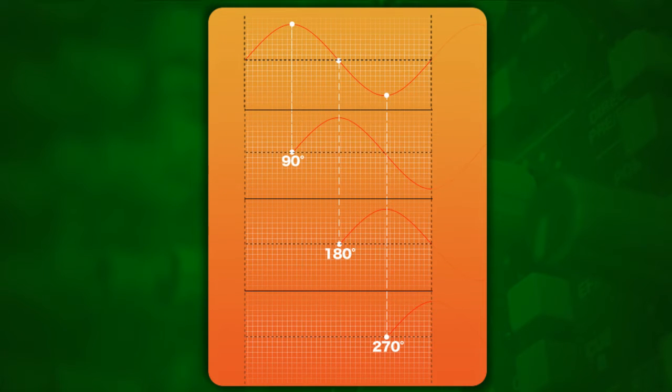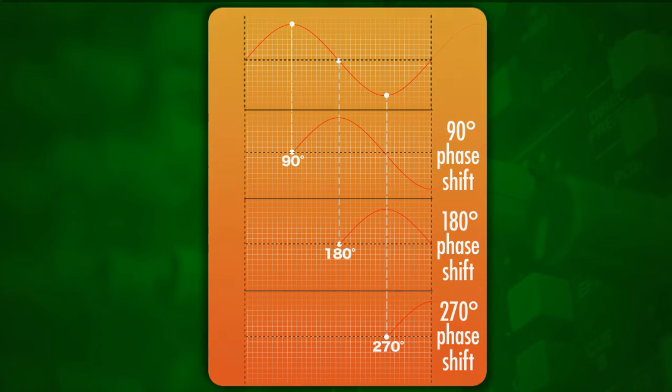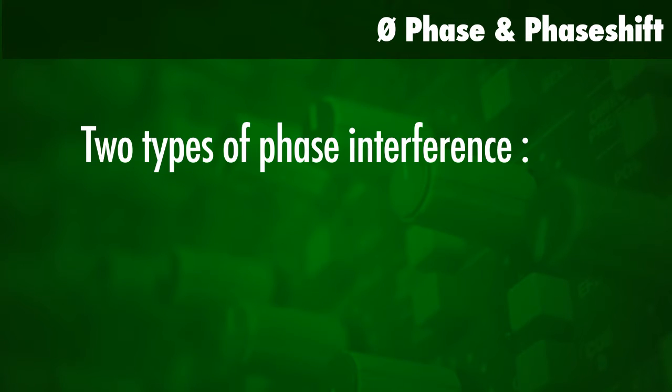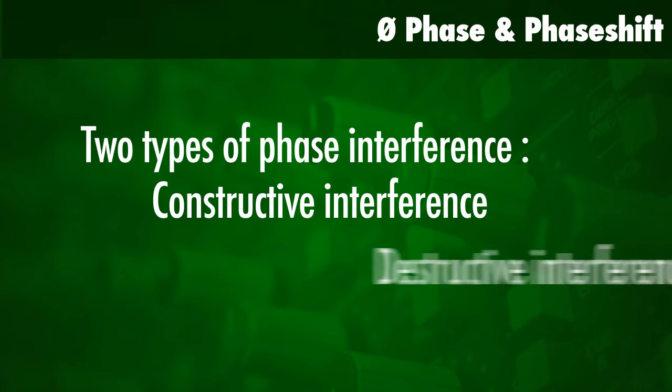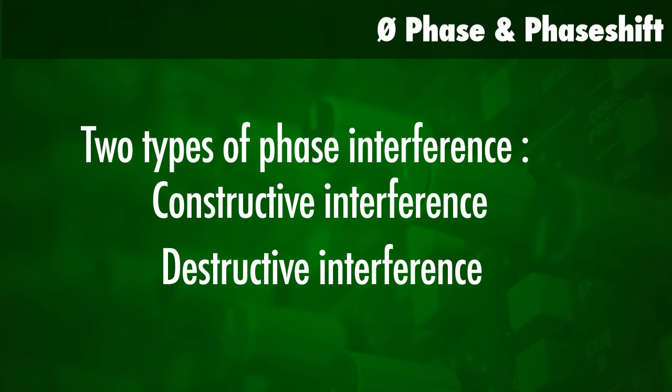The difference between the phases of these two different points is what we call the phase shift. This phase shift can be of two different types: we can have a constructive interference or a destructive interference.